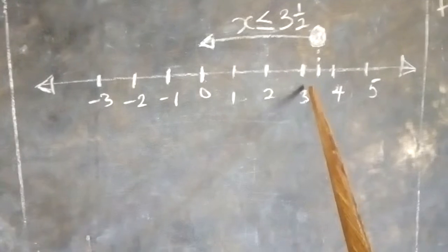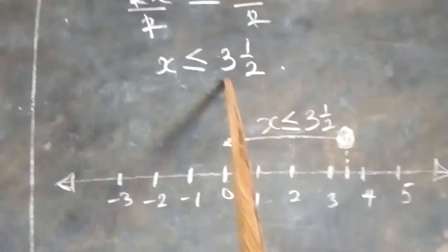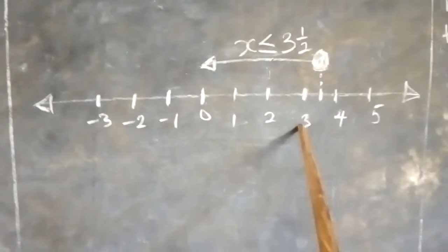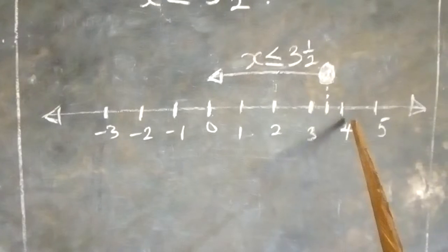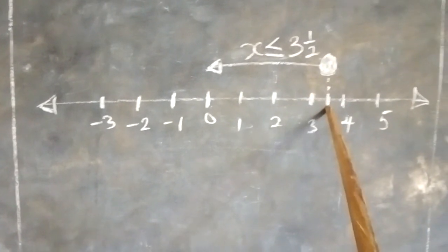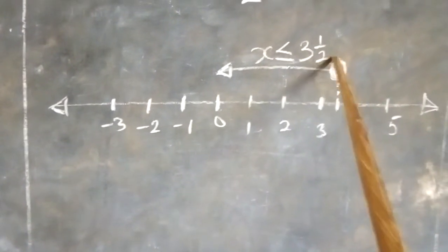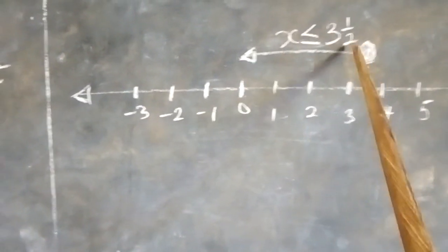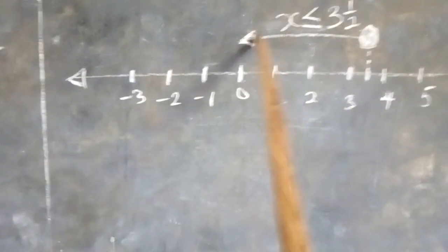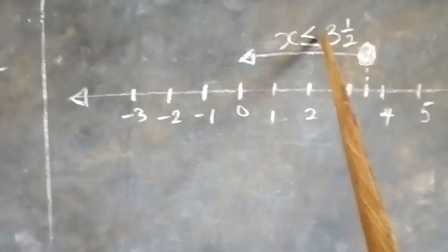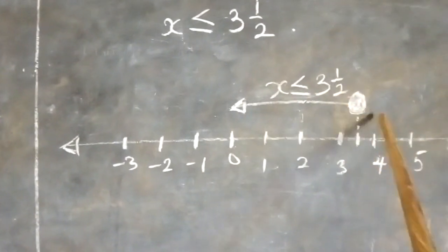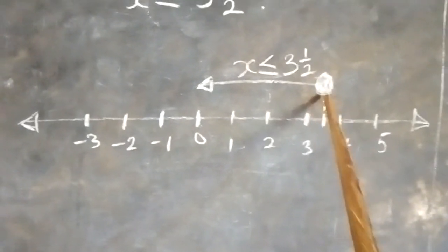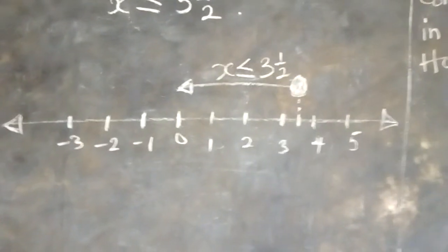We need positive 3 and a half. Since it is not minus but positive 3 and a half, it should be on the positive side. Between 3 and 4, we mark 3 and a half. We use a filled circle at 3 and a half with an arrow going left, showing x is less than or equal to 3 and a half. Thank you so much.